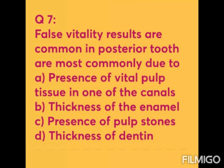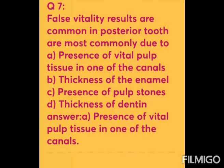Question 7: False vitality results are most commonly due to — Option A: presence of vital pulp tissue in one of the canals. Option B: thickness of the enamel. Option C: presence of pulp stones. Option D: thickness of the dentine. The answer is Option A — presence of vital pulp tissue in one of the canals, because in multi-rooted teeth the pulp may be partially necrotic with some nerve fibers still vital in one or more root canals, indicating a false positive response.